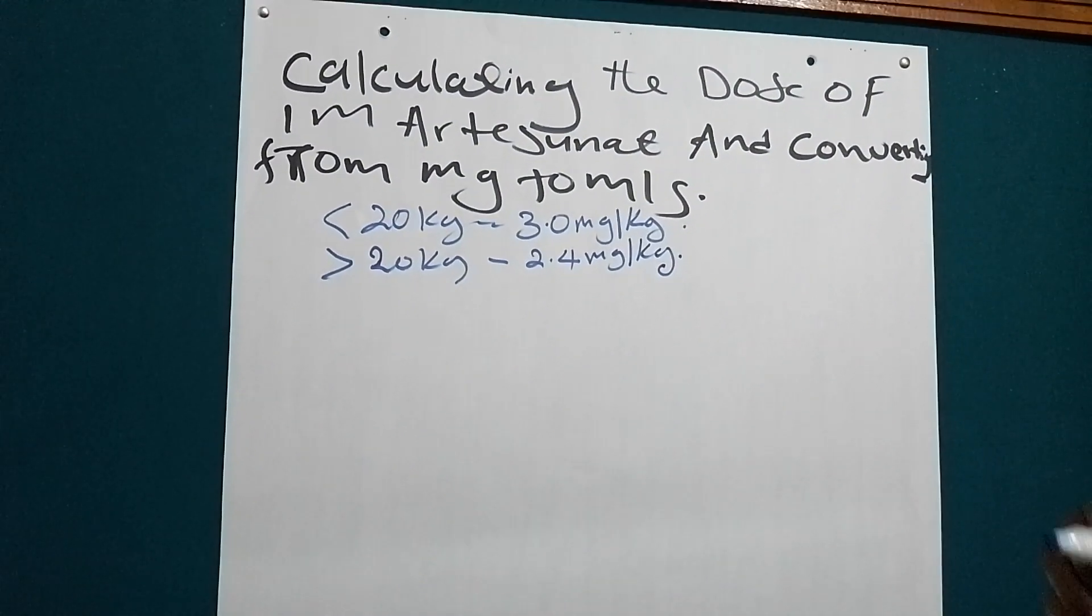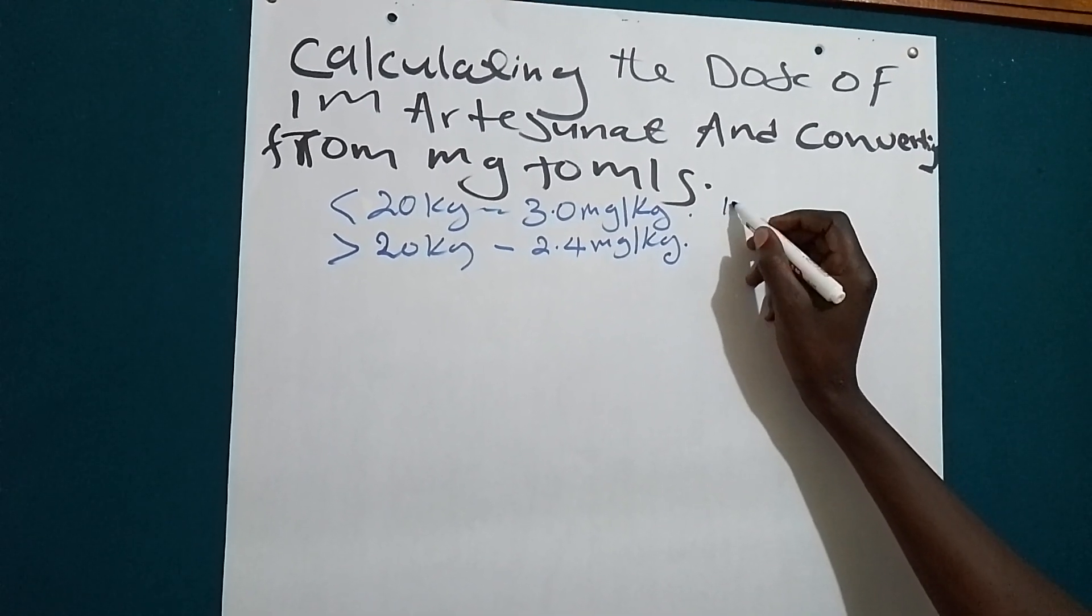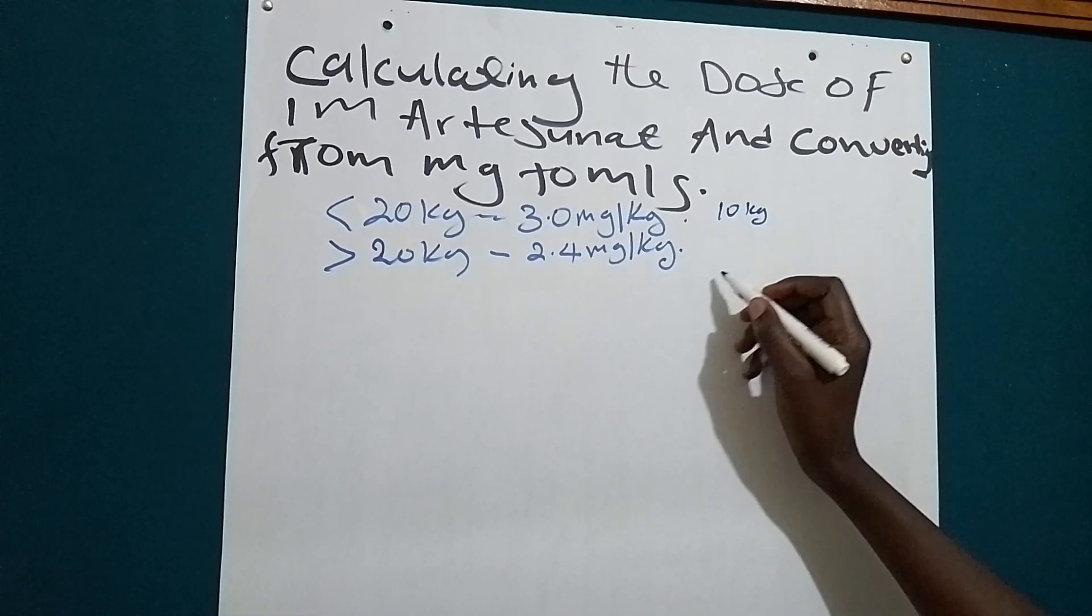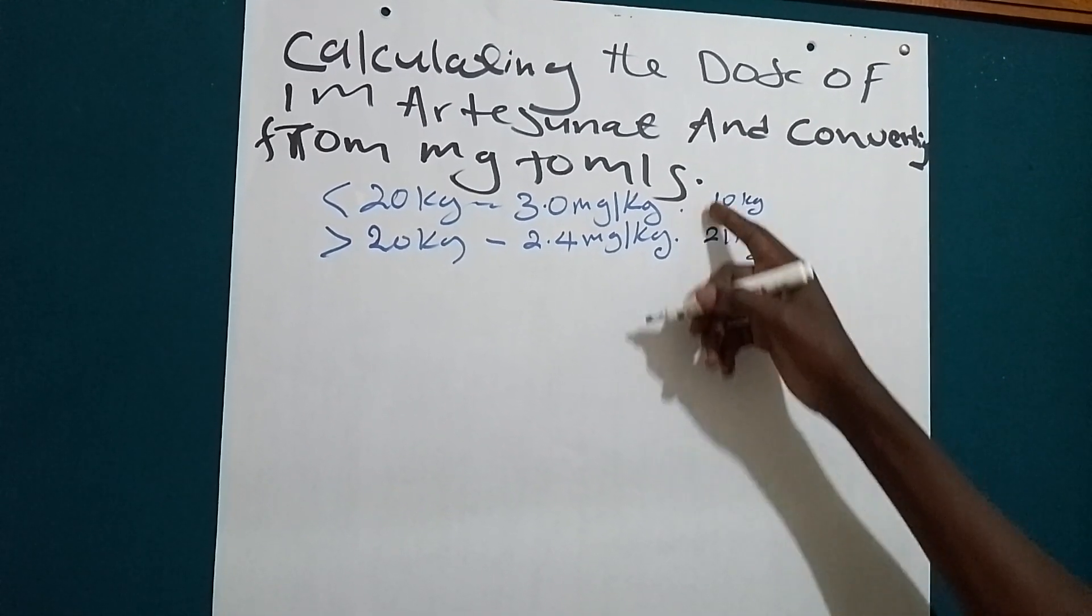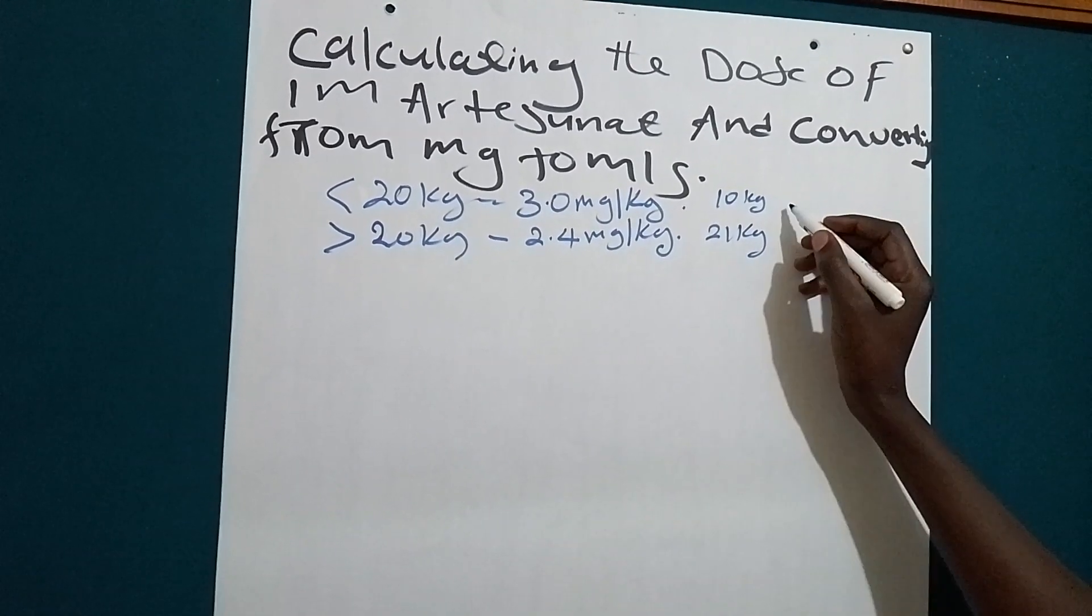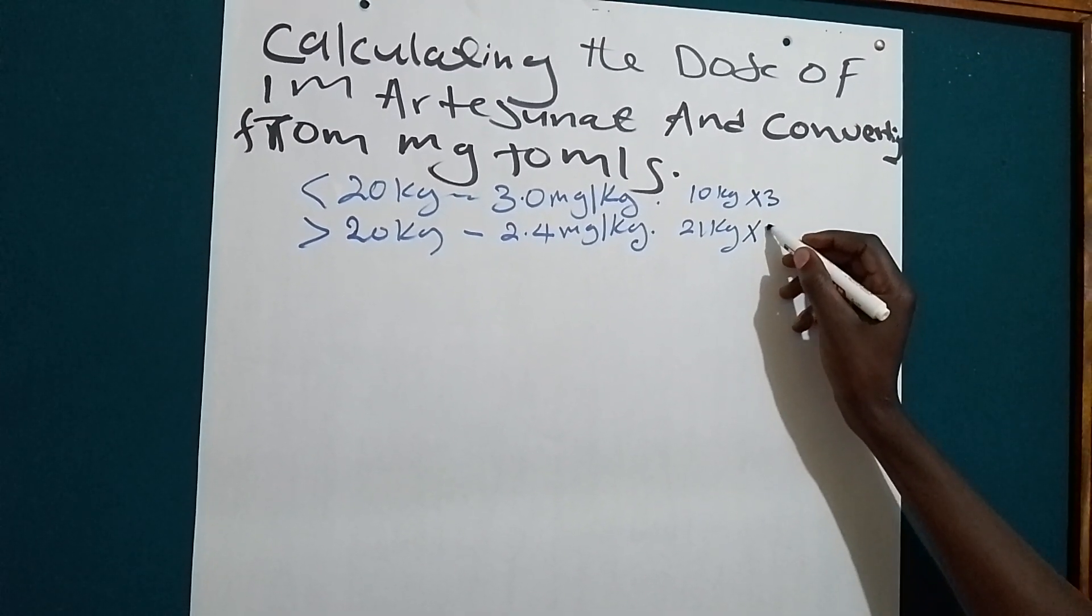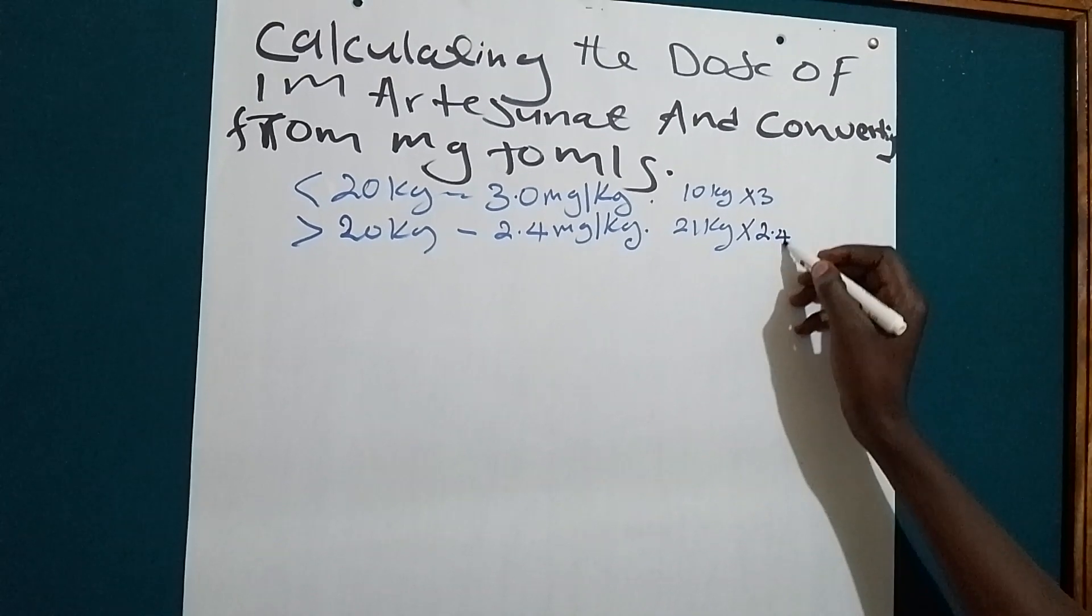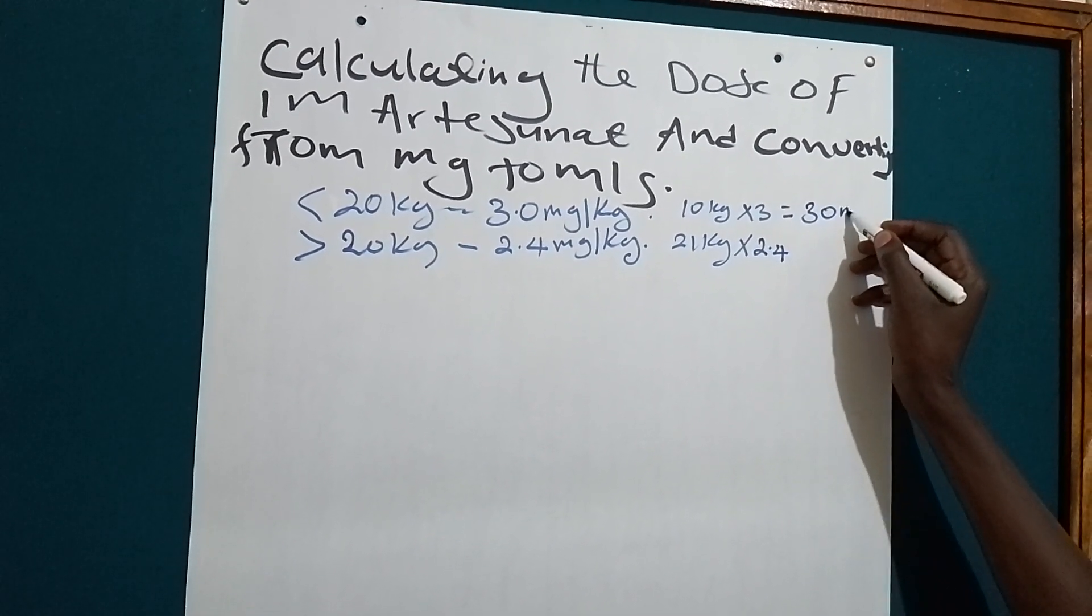Let's give a scenario where our child is having 10 kilograms and the other one is 21 kilograms. Let's first get the dose of this one. We will multiply this one by 3 and then multiply this one by 2.4. So what will we get? This one is 30 milligrams.